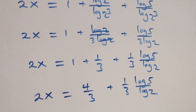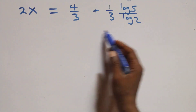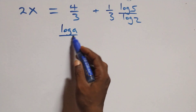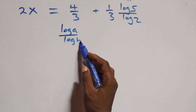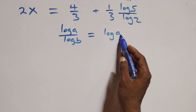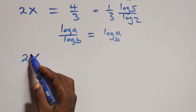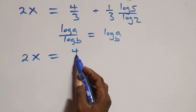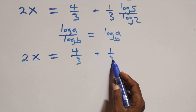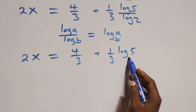The next step: we apply the change of base formula. We have log a over log b, which is the same thing as log a to base b. So here we have 2x equals to 4 over 3 plus 1 over 3 times log 5 base 2.